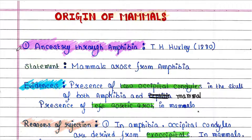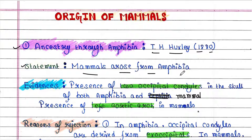The first theory is ancestry through Amphibia. This theory was stated by T.H. Huxley in 1880. According to this theory, it is stated that mammals arose from amphibia.